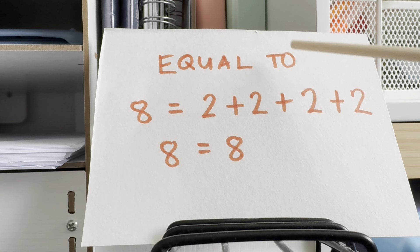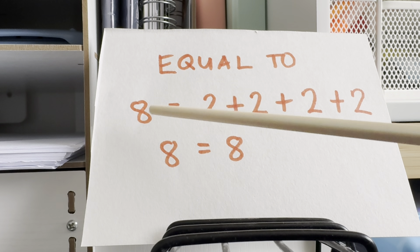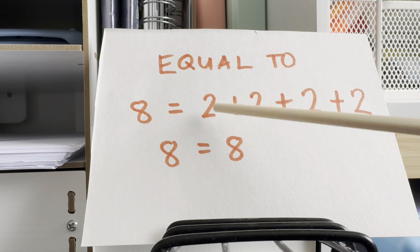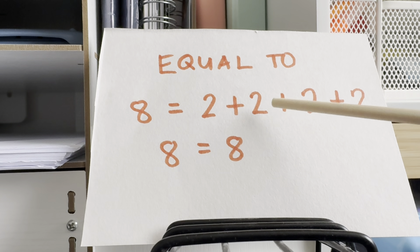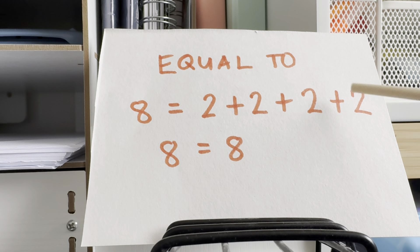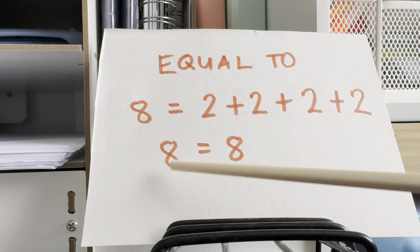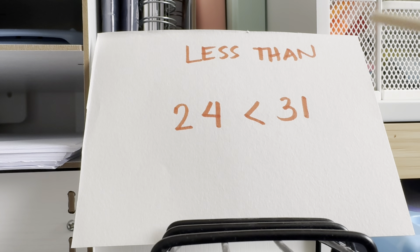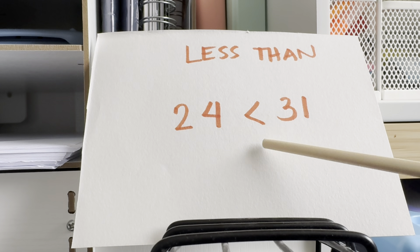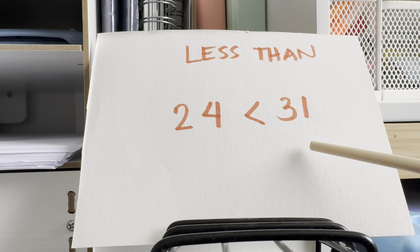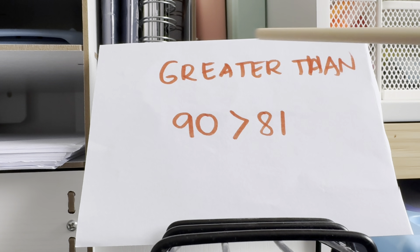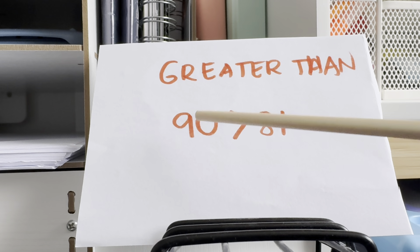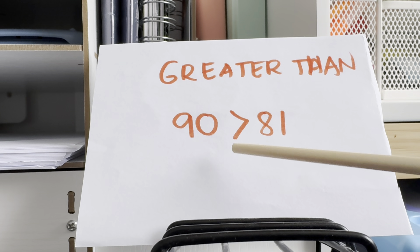Next, equal to: 8 is equals to 2 plus 2 plus 2 plus 2, or 8 is equals to 8. Less than: 24 is less than 31. Greater than: 90 is greater than 81.